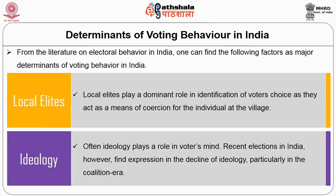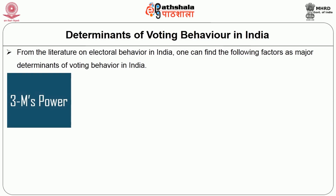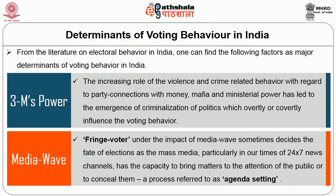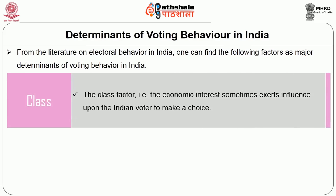Eleventh, ideology — ideologies often play a role in voters' minds; however, recent elections in India find expression in the decline of ideology, particularly in the coalition era. Twelfth, the 3Ms — money, mafia and ministerial power. The increasing role of violence and crime-related behaviour with party connections to money, mafia and ministerial power has led to the emergence of criminalisation of politics, which overtly or covertly influences voting behaviour. Thirteenth, media wave — the mass media, particularly in our times of 24x7 news channels, has the capacity to bring matters to public attention or conceal them — a process referred to as agenda setting. Fourteenth, the class factor — economic interests sometimes exert influence upon Indian voters to make a choice.